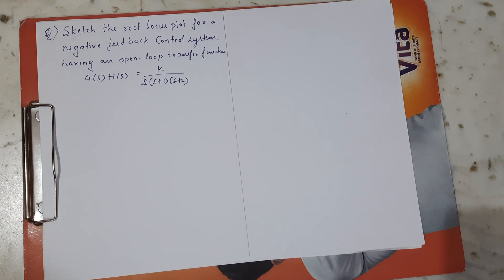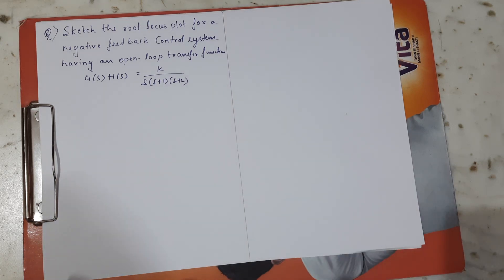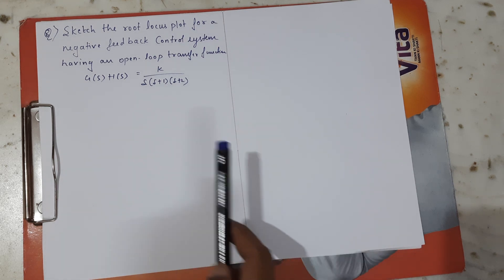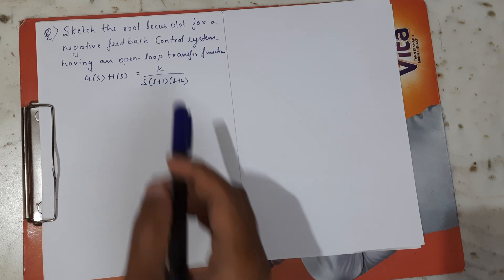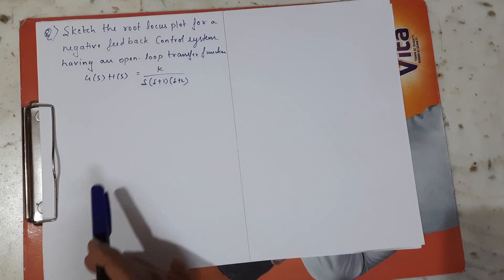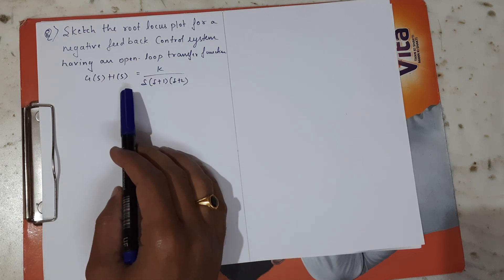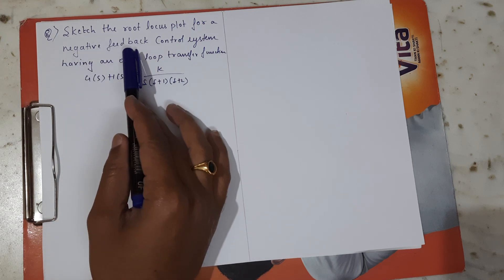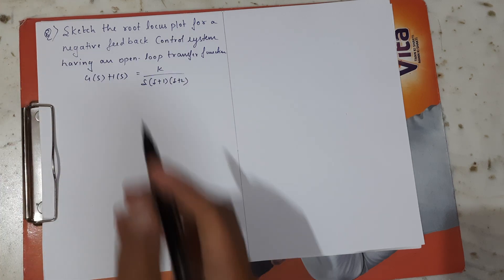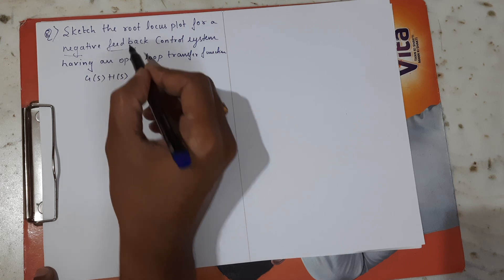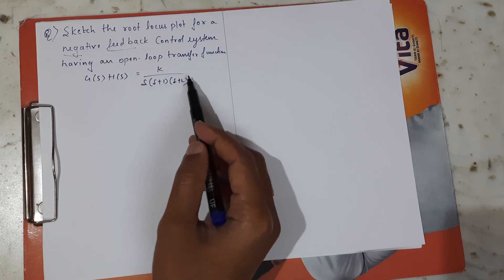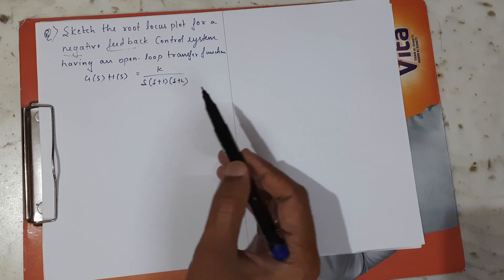Hello friends, welcome to the class on control engineering. In this video we are going to solve another problem on root locus. The problem has G(s)H(s) given for a negative feedback control system, where G(s)H(s) = k divided by s(s+1)(s+2).